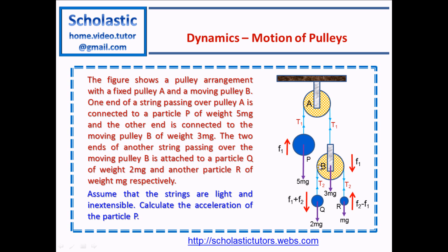For particle R, which moves upward relative to the pulley at F2, and the pulley moves down at F1, the resultant acceleration relative to Earth is F2 minus F1. For particle Q, which moves downward relative to the pulley at F2, and the pulley also moves down at F1, both accelerations are in the same direction, so the resultant is F1 plus F2. T1 is the tension in the string over pulley A — the same tension on both sides. T2 is the tension in the string over pulley B — the same on both sides.